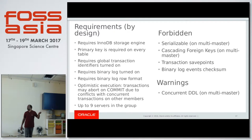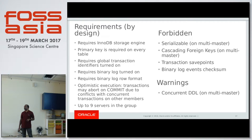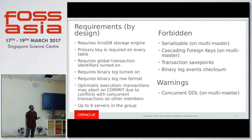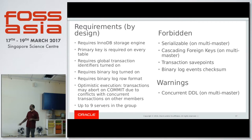These are the requirements: InnoDB — group replication support is only for InnoDB tables. You must have a primary key on all tables. It requires global transaction identifiers (GTIDs) to be turned on, binary logging to be turned on, and row format to be enabled. Your application should also be optimistic because some transactions may be rolled back even after being prepared. The application planned to run on group replication has to be written with this in mind.